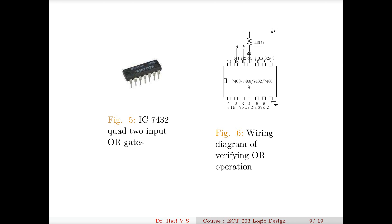The chip under consideration is 7432. All these chips have the same internal structure and pin structure. If I place a 7432 IC on the board, ground pin 7 and connect pin 14 to VCC or 5V. Then I take one of the inputs — pin 13 is an input, pin 12 is an input, and pin 11 is an output. You can connect any of these — pins 1 and 2 as inputs and pin 3 as output, as you wish.